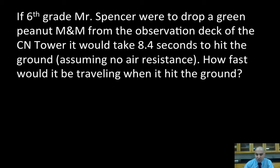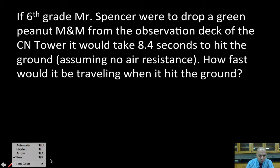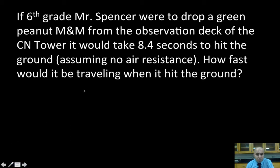So here's our first example. Let me get my pen up and running here. Make sure that we've got the right color. All right, so here's what we've got. So if sixth grade Mr. Spencer were to drop a green peanut M&M – once again, I have no idea why it had to be a green peanut M&M, but that's just what I said – from the observation deck of the CN Tower, it's going to take about 8.4 seconds to hit the ground. And we're playing pretend here. We're assuming that there's no air resistance. Now, how fast would that be traveling when it hits the ground? All right, so here's what we're going to do. We're going to plan a little bit, and we've talked about this before, but we want to figure out first, what are we trying to find?